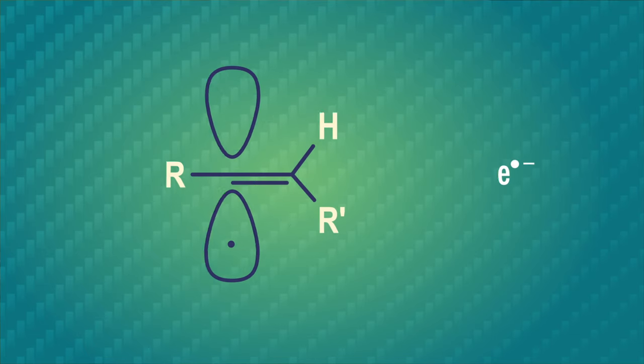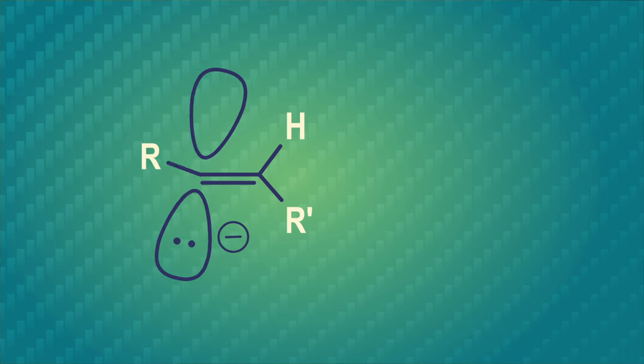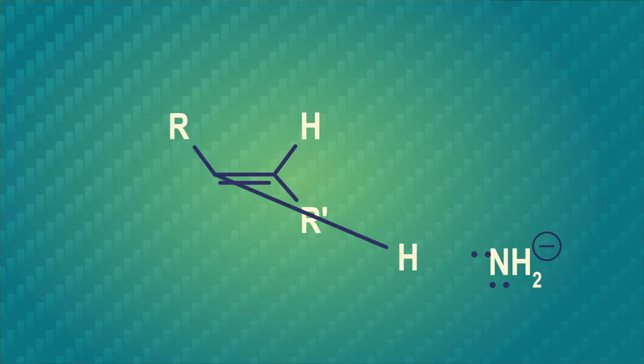To finish this reaction, another solvated electron comes along, adds to the orbital holding that radical, and makes another negative charge, putting five valence electrons on the formerly radical carbon. At this point, the R groups reorganize themselves to different sides of the double bond to make a more stable anion. Finally, another molecule of ammonia is deprotonated, and we get an E-alkene.